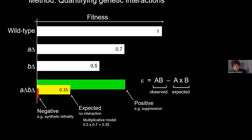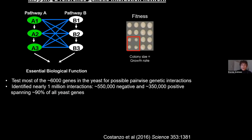We can also look for positive interactions, where the double mutant grows better than expected based on predicted fitness. This includes the class of genetic suppression, which has turned out to be fairly important in human genetic disease but is relatively poorly understood mechanistically. We can get very accurate colony size measurements and extract this kind of information about genetic interactions.